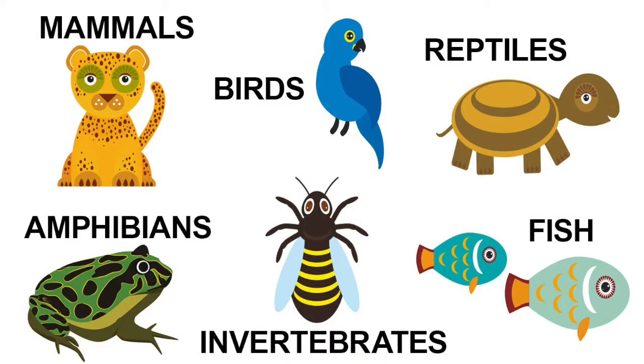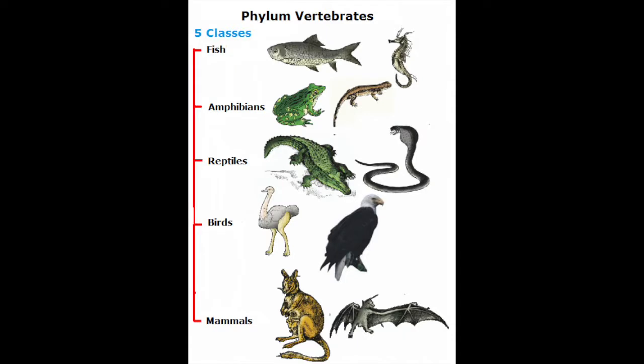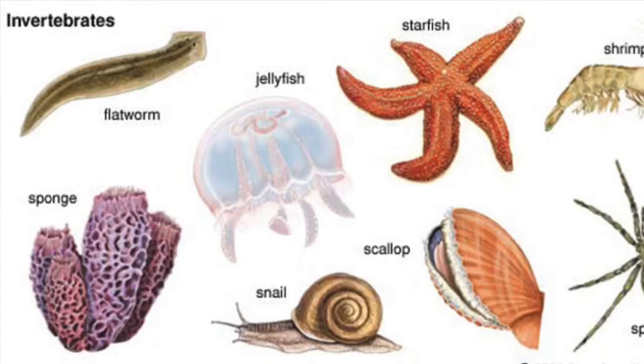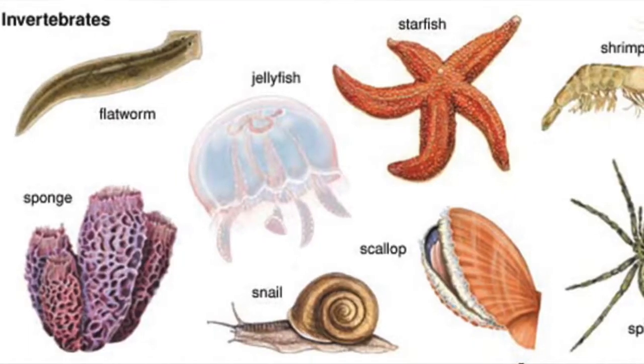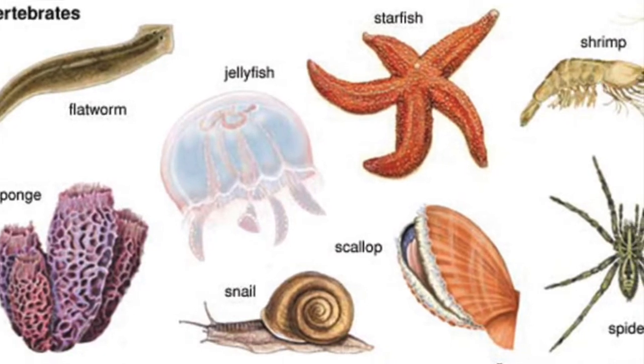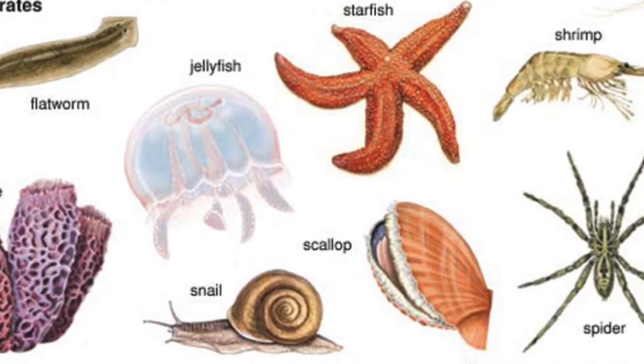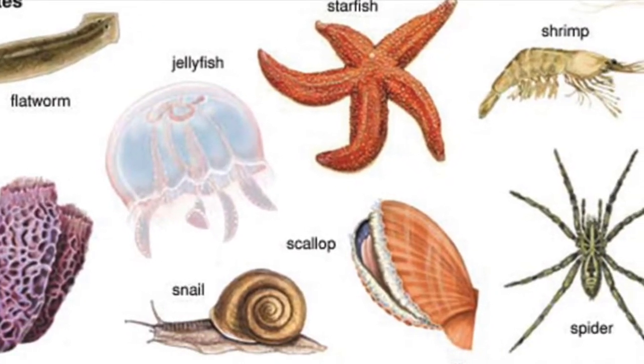Birds, reptiles, and fish are non-mammals. Animals which have backbones are called vertebrates — mammals, birds, fish, reptiles, and amphibians are all vertebrates. Insects and worms do not have backbones, so they are invertebrates.